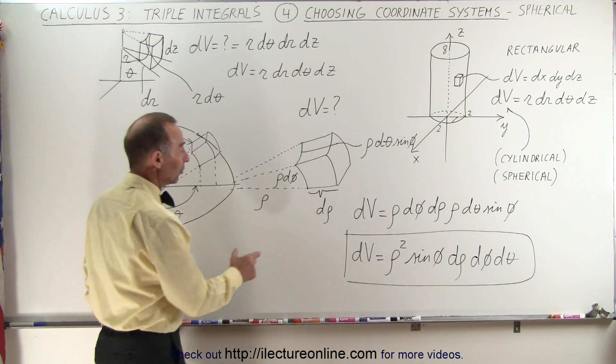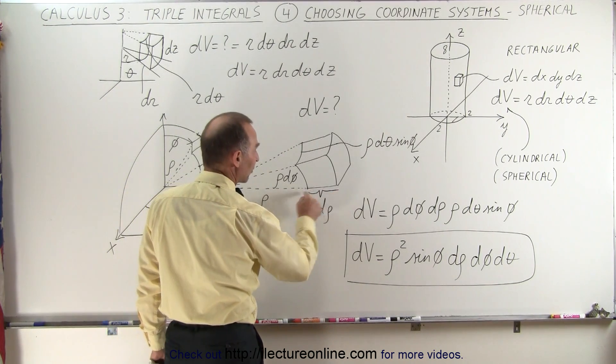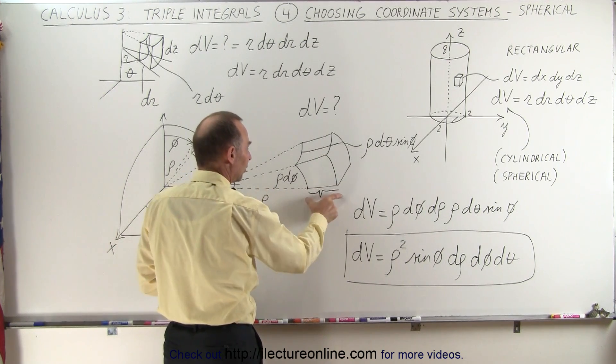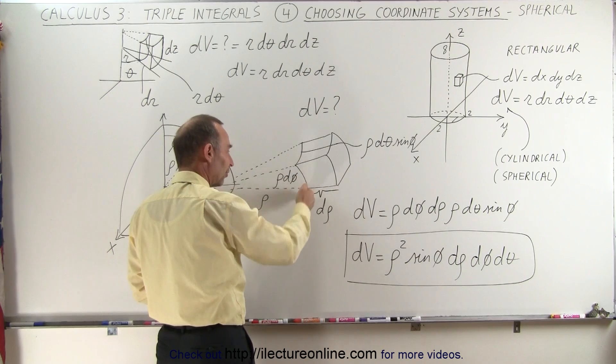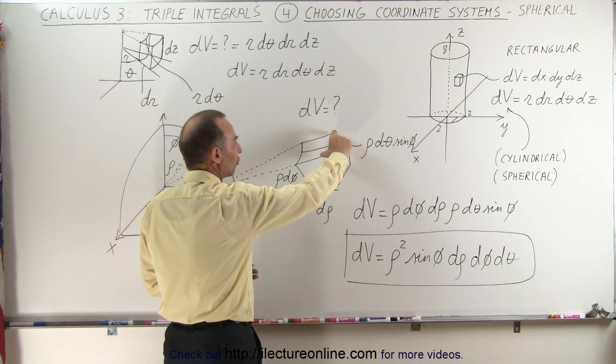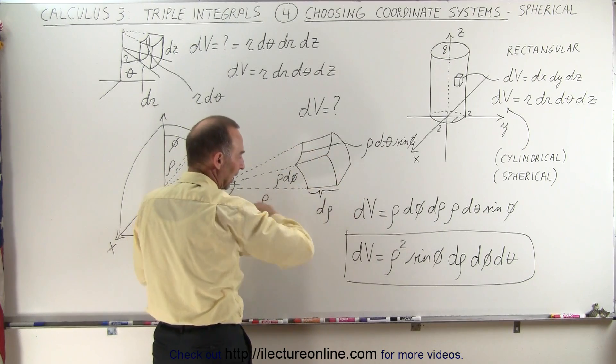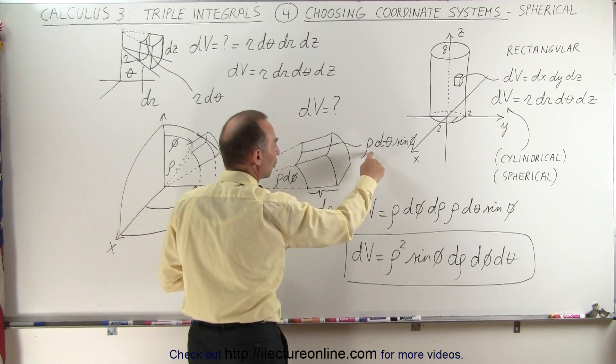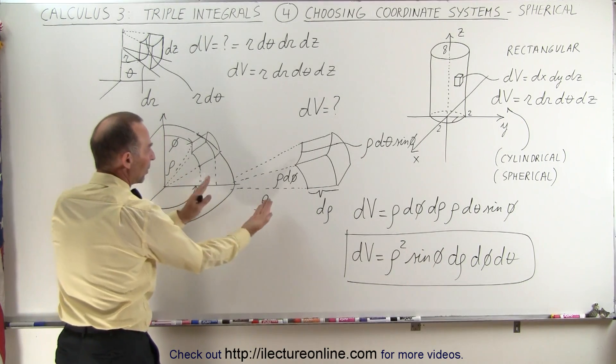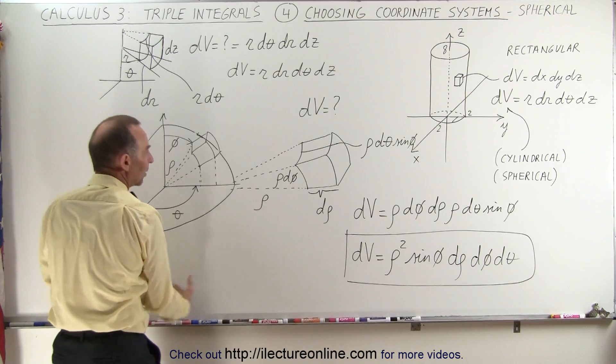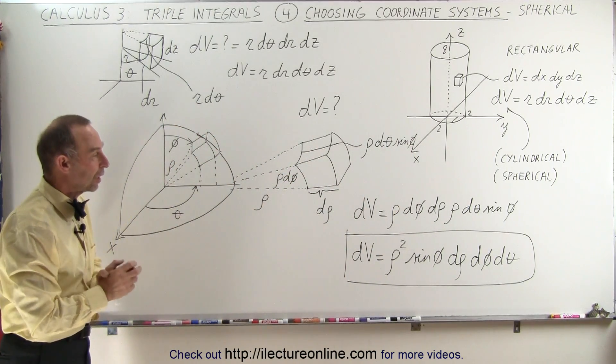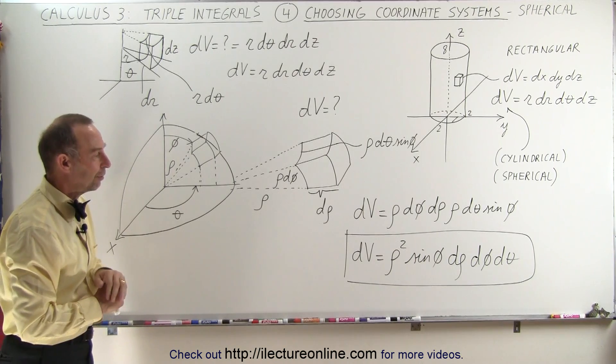So again, the way we get those is we get a d rho here from a change in the radius, or radial radius from the center of the circle. Then we have this distance here, which is like an arc length of a circle, which is rho times d phi, which is straightforward. But then here, this width here, normally if you put it at the xy plane, it would be equal to rho times d theta, because you have rho times a change in the angle. But the slice becomes thinner at the top and thinner at the bottom. So we have to throw in a sine of phi in there to adjust for that changing width. And so that's how we end up with our volume element.